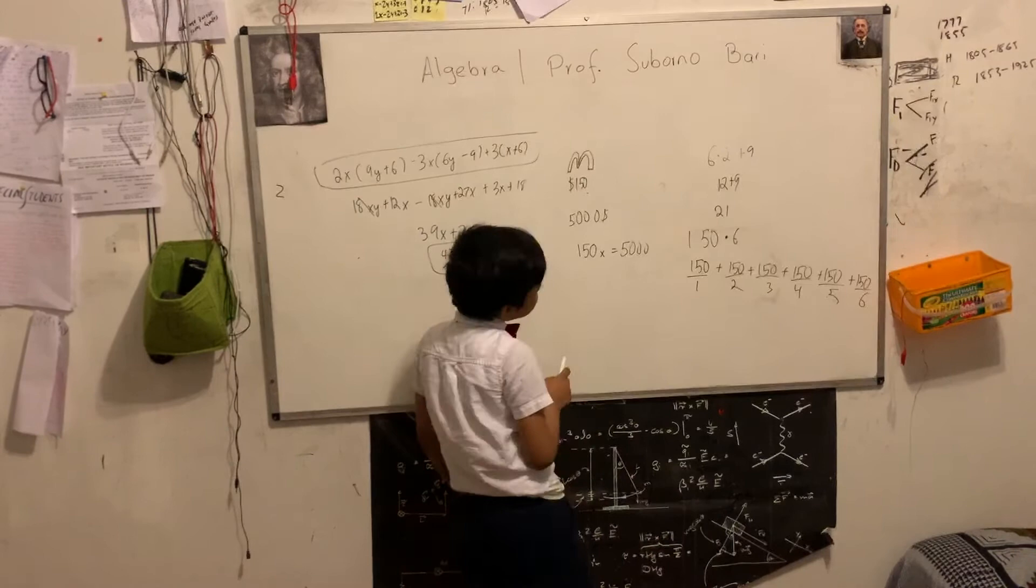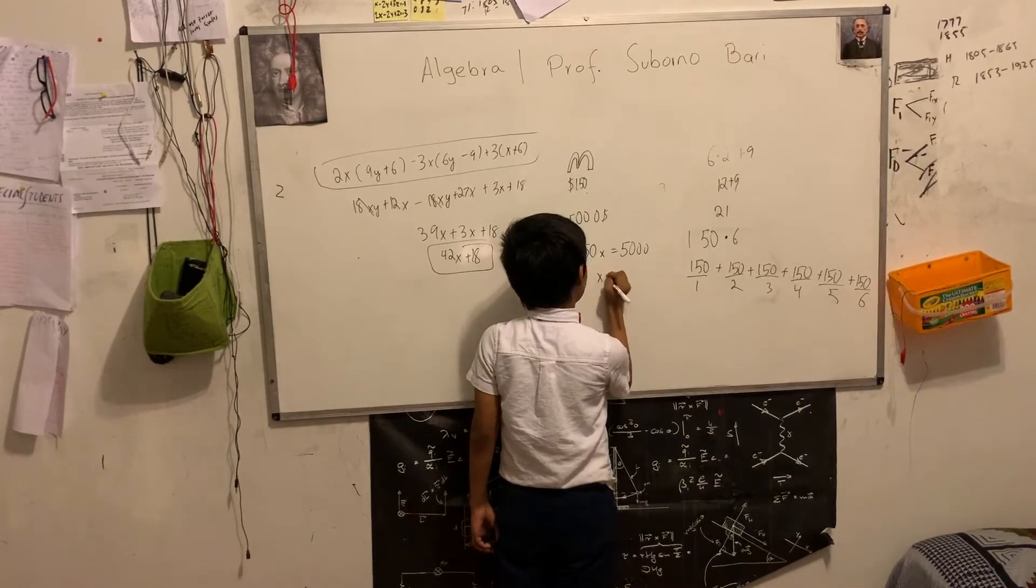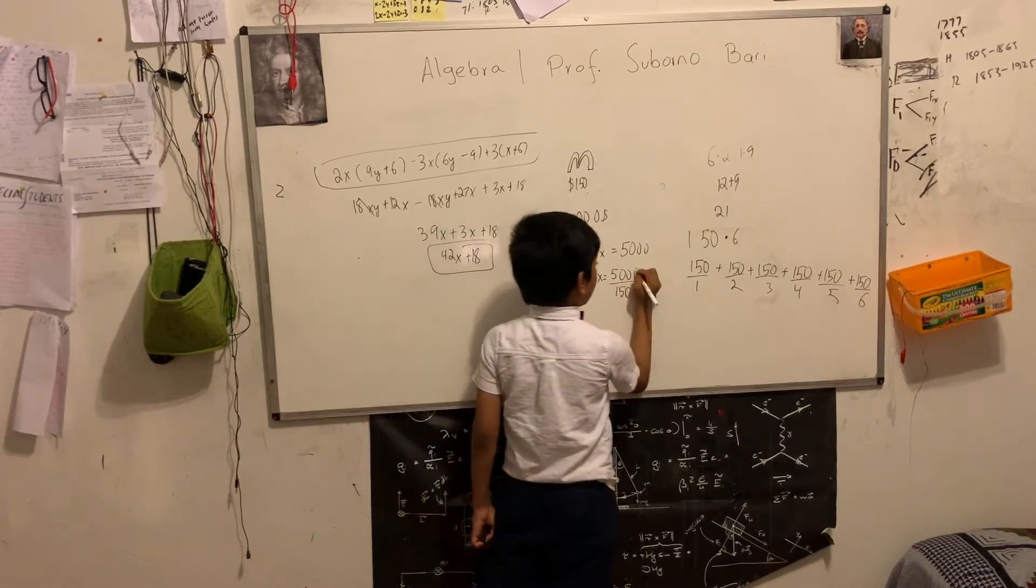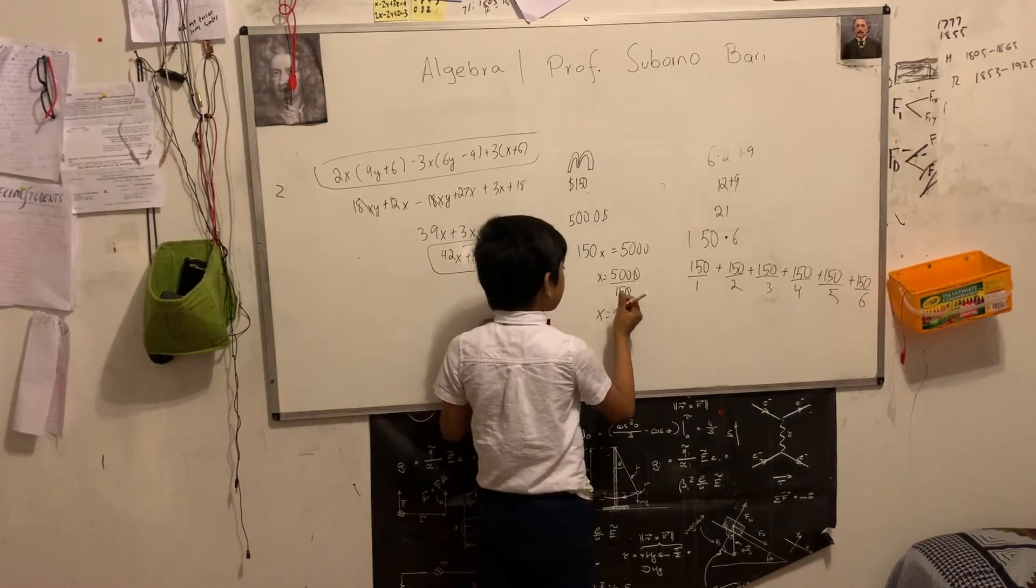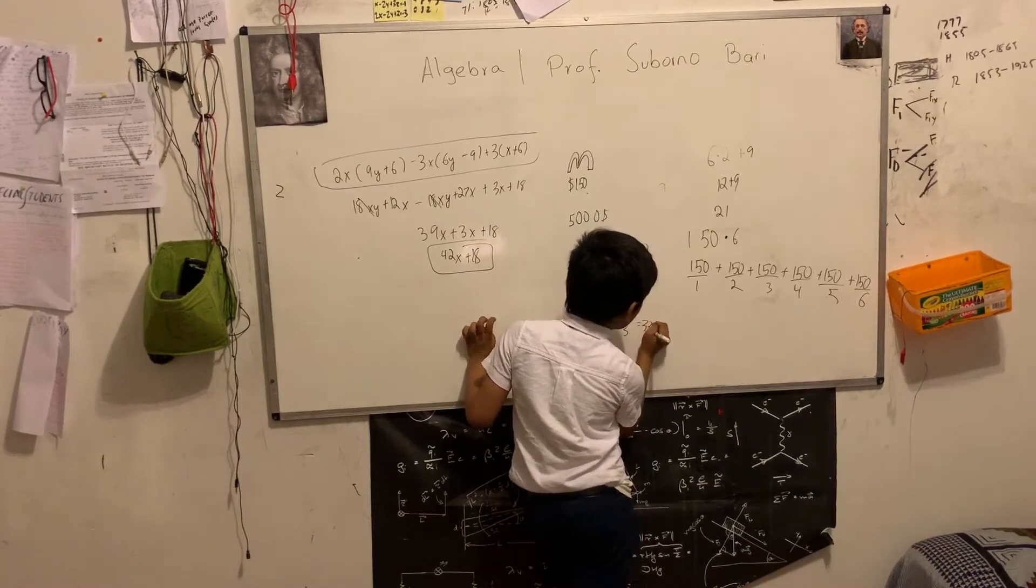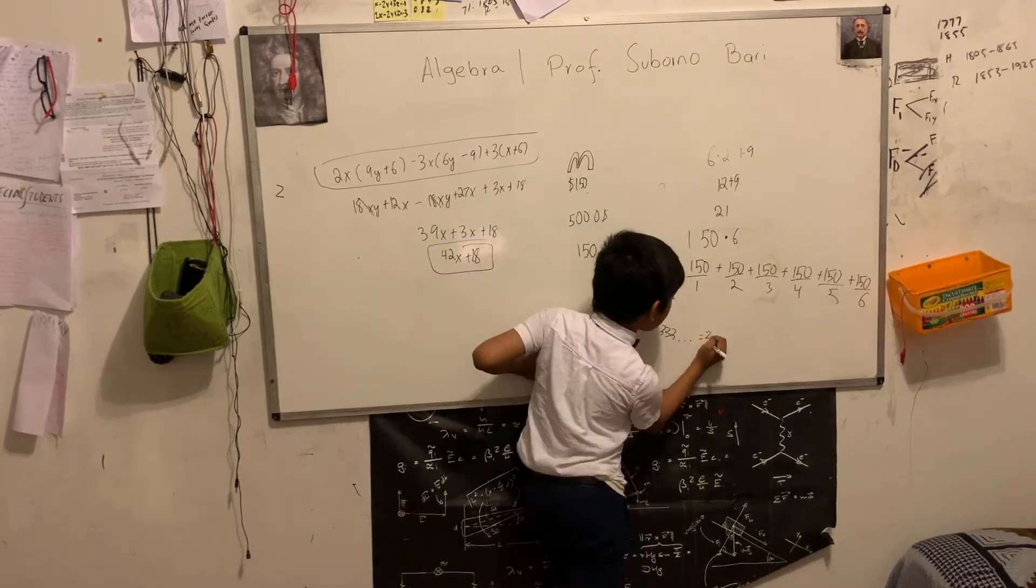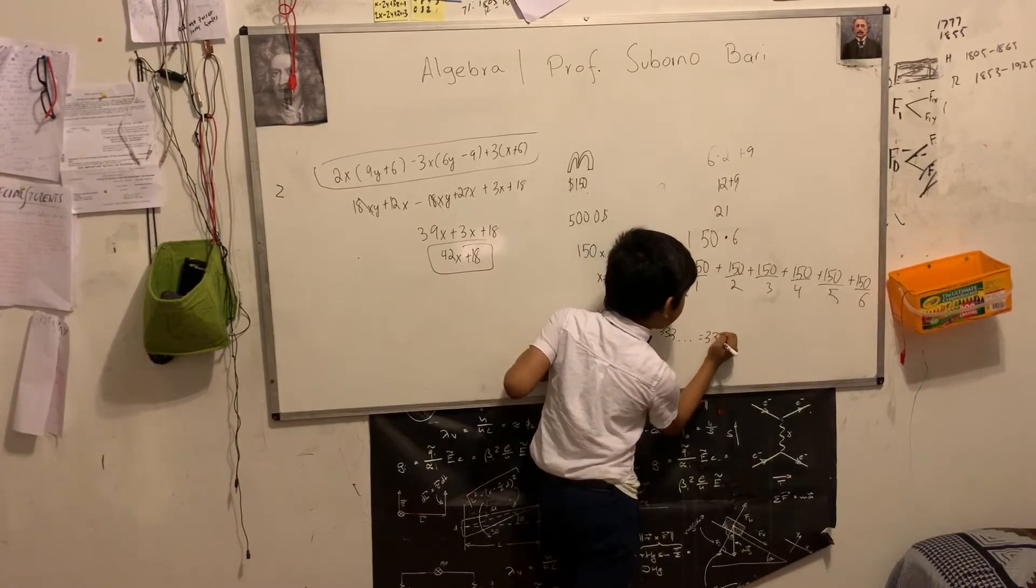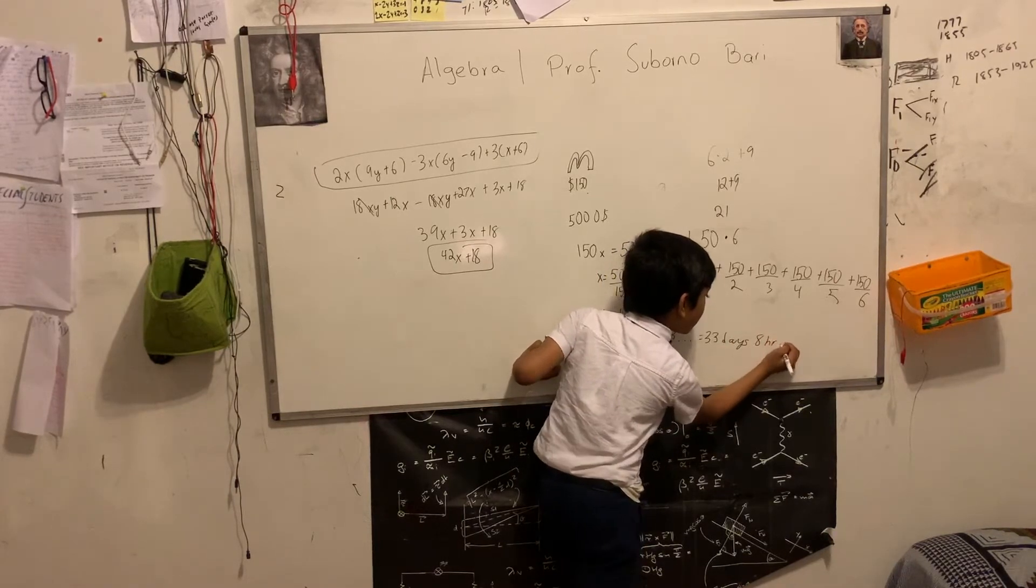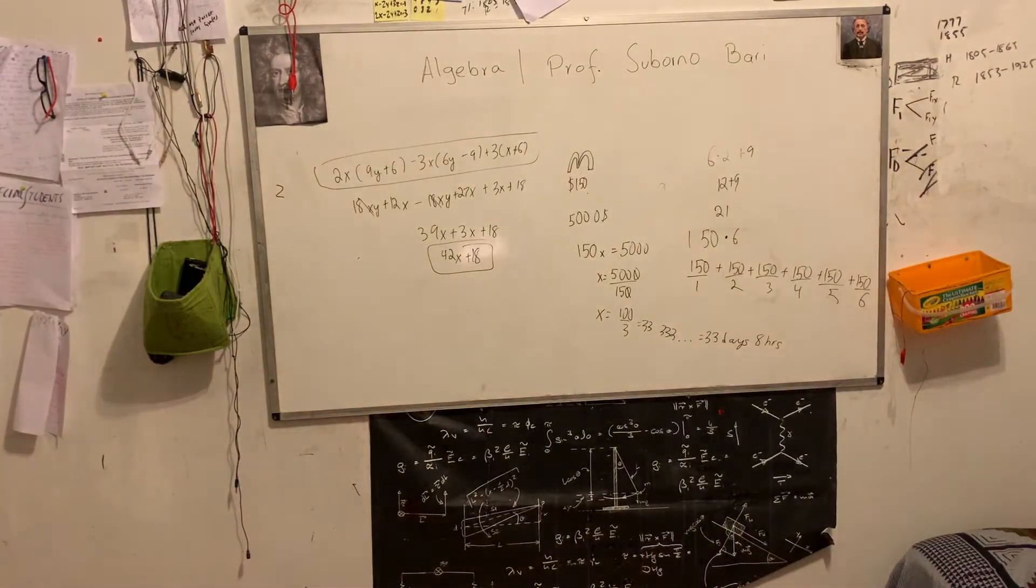So $150 times x, equal to $5,000. Now we can use the beautiful division property to get what we want, $5,000 over $150. Now cancel out the factors. 100 over 3, which is going to be equal to 33.333 in decimal. This is going to be approximately 33 days and 8 hours. So basically, a month and three days. A month and... Son of a... You spoiled the answers.